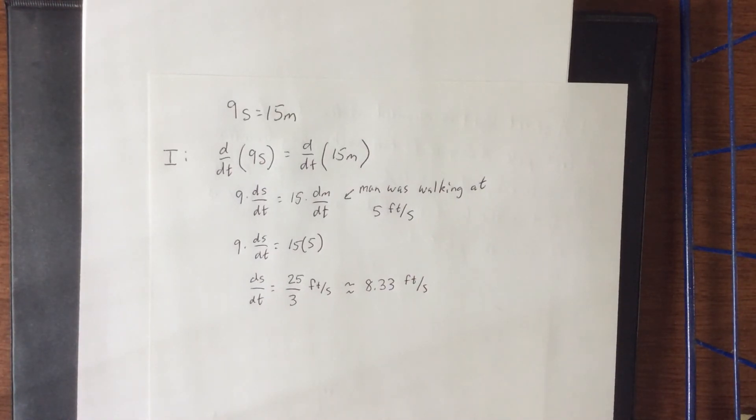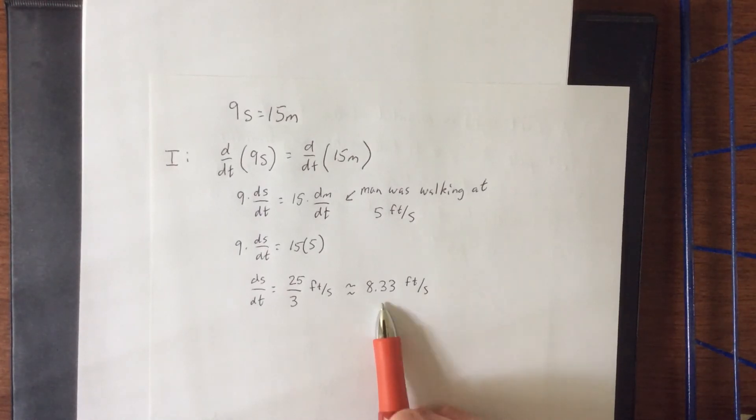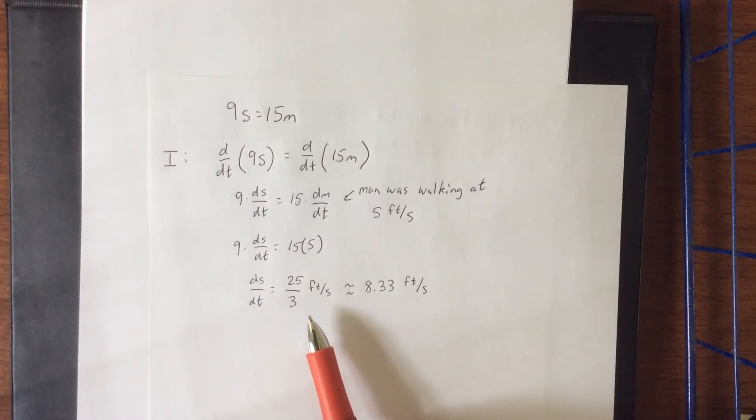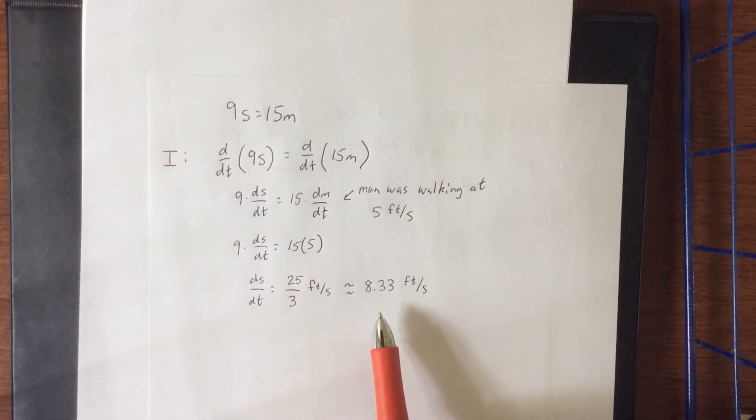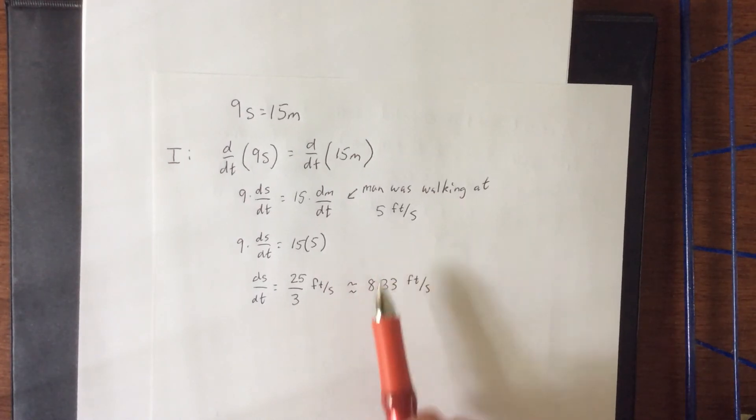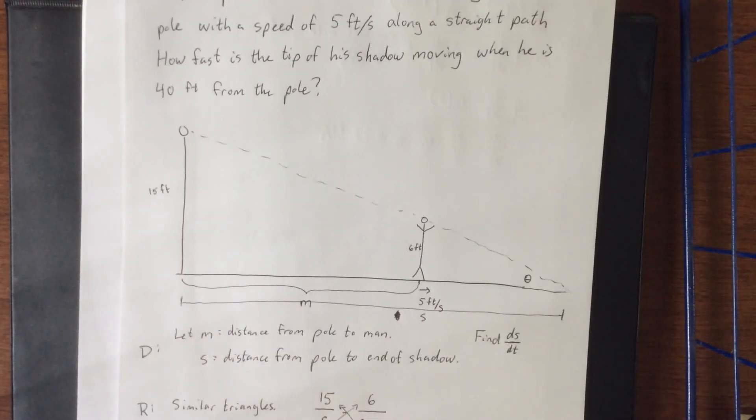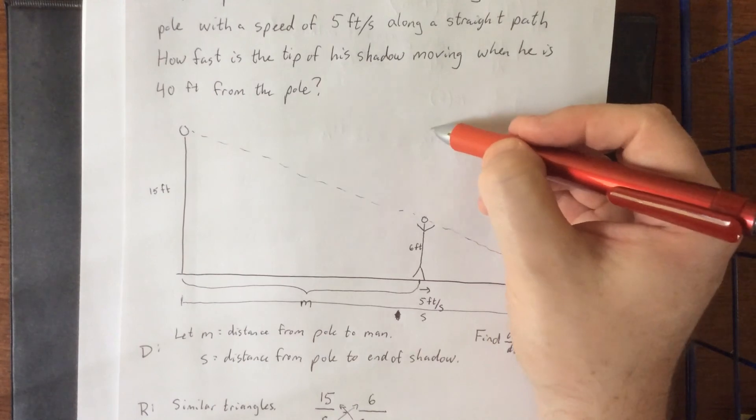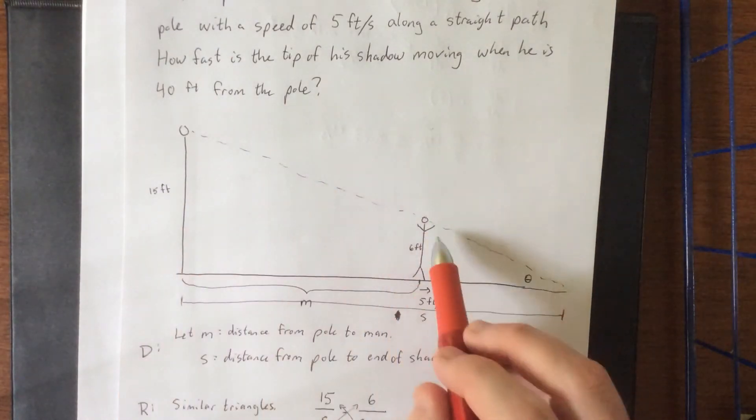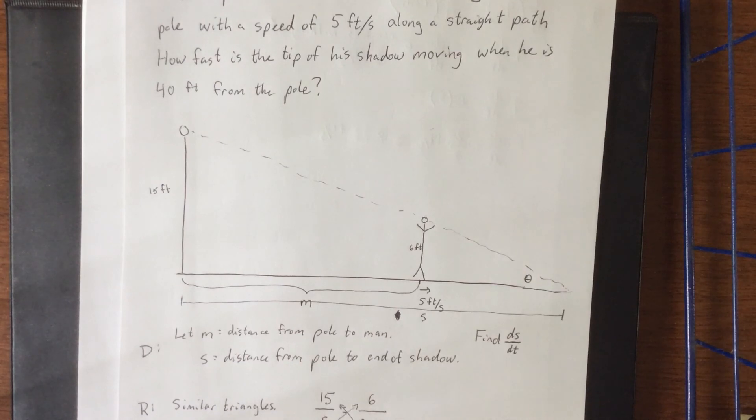Now, here is something super important. At what point did we use the fact that the man was 40 feet away from the pole? The answer is we didn't. What this means is that regardless of the man's position, the tip of the shadow is going to be moving at the same speed. And that same speed is 5 thirds times what his original walking speed was. By an amazing coincidence, if you take a look at the ratio of the distance between the top of his head and the top of the pole, that ratio would also be 5 thirds. So most likely those two quantities are related to each other. But that's a story for another time.